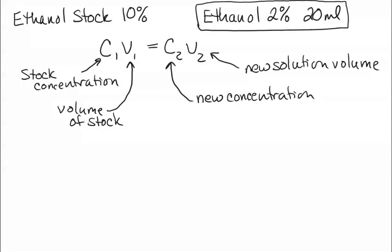So let's see how we can apply this equation to the problem at hand. What pieces of the puzzle do we already know? We know that we want to make 20 milliliters of our new solution, so that is going to be our V2, the volume of our new solution.